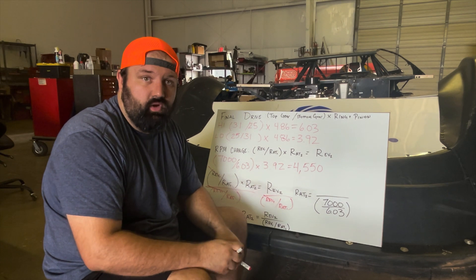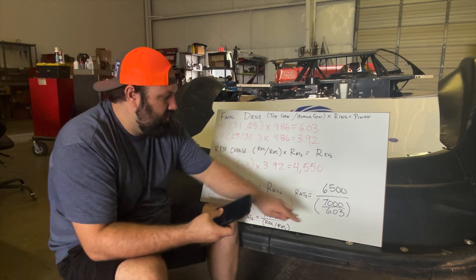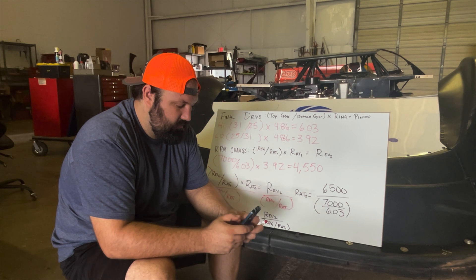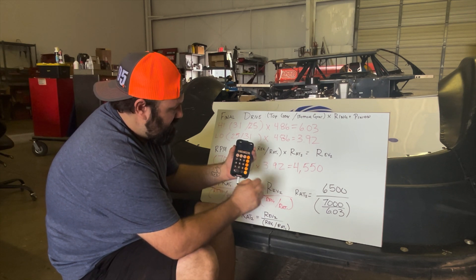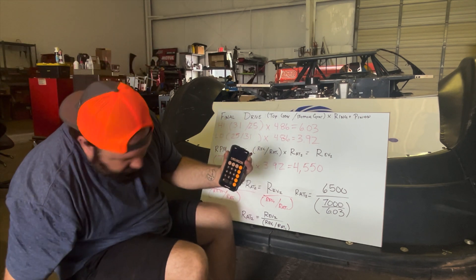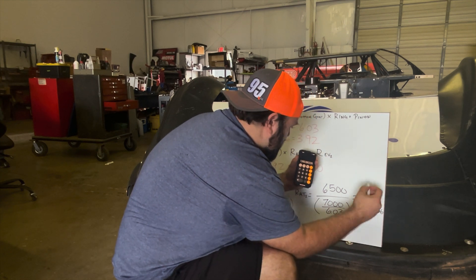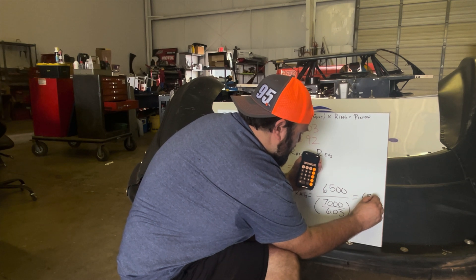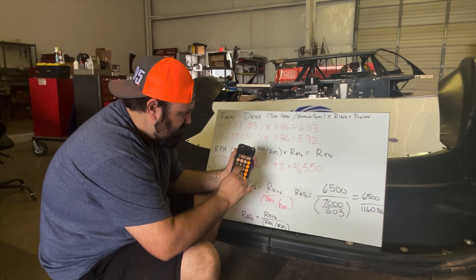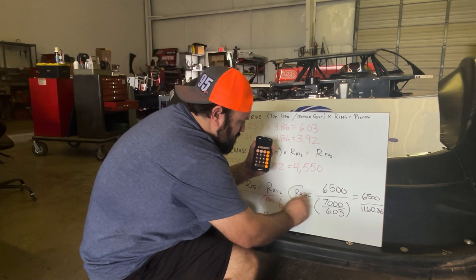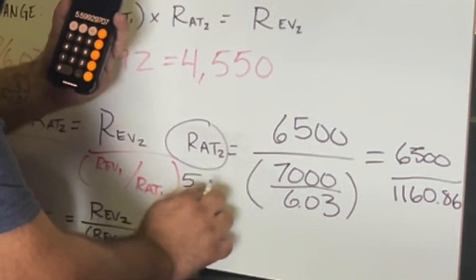Instead of 7,000 RPM, we want to run 6,500 RPM. Using our calculator: 7,000 divided by 6.03 gives us 1,160.86. To get our new ratio, we take 6,500 divided by 1,160.86, which gives us a new ratio of 5.555 — rounding to 5.60.